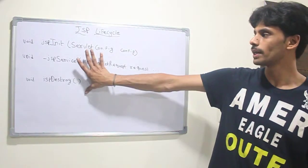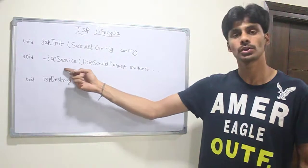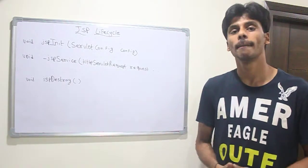And these two, per a servlet, are called only once in the lifecycle of a JSP, whereas the underscore JSP service method is called multiple times.